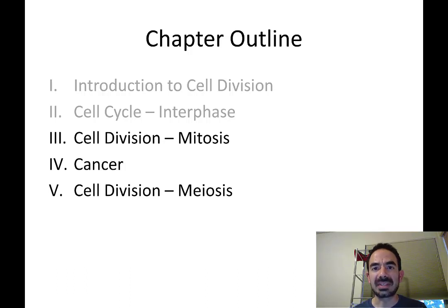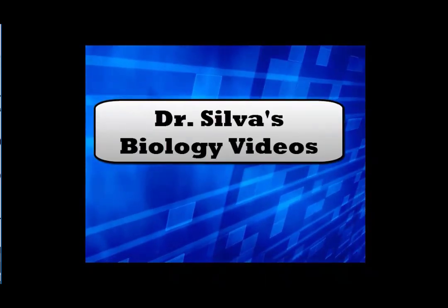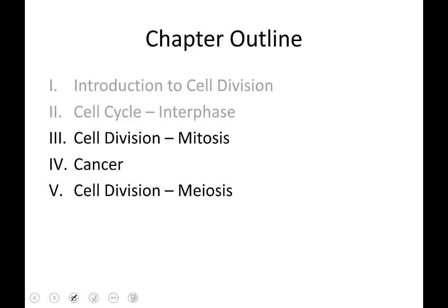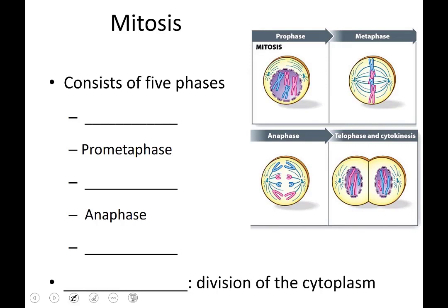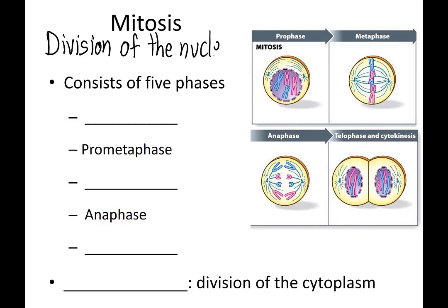We'll talk about the steps of the division of the nucleus — mitosis. Cell division is made of mitosis and cytokinesis. Mitosis is the division of the nucleus, and cytokinesis is the division of the cytoplasm. Together, mitosis and cytokinesis make up cell division.